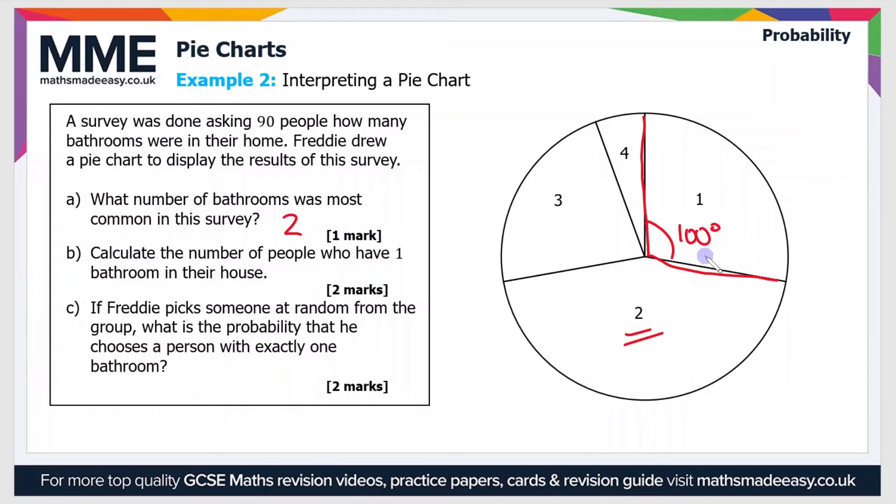So if we know that the angle is 100 degrees and we know that there are 90 people in total, then we can work out how many people are in this particular category by working out what fraction of the pie chart. So what fraction of the total circle is taken up by this angle and then multiplying it by the total number of people.